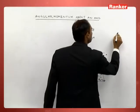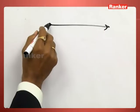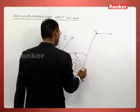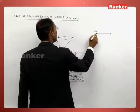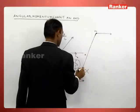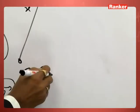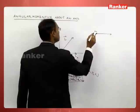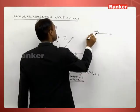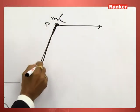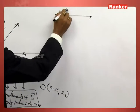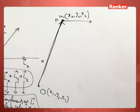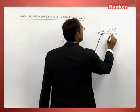When you take the angular momentum of a particle with respect to a reference point, let the reference point have coordinates x1, y1, and z1, and the coordinates of the mass with respect to the reference point be x2, y2, z2. The linear momentum will be mv.